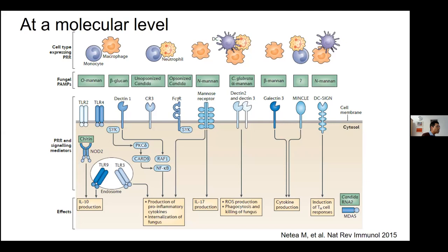Each different fungal PAMP is recognized by a slightly different pathogen recognition receptor. For instance, the C-type lectins like Dectin-1 recognize beta-glucan. As a consequence of this recognition, a whole pro-inflammatory cytokine cascade is set off, which then leads to the effector response we saw earlier.